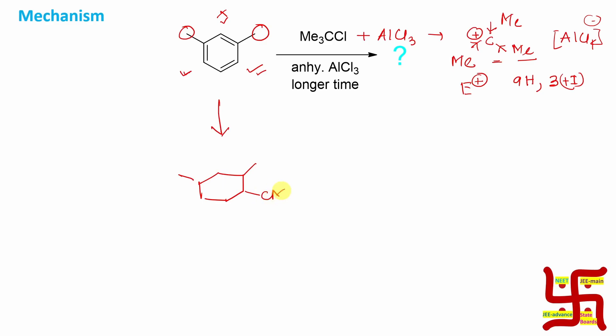So this is the product. The question is: is this the product? Answer is no. Because I mentioned tertiary butyl chloride and anhydrous AlCl3, but what about longer time? And another thing, remember students, this Friedel-Craft alkylation is also a reversible reaction. What do I mean? This could be produced instantly, and actually this is, I shall say, a KCP - kinetic control product.